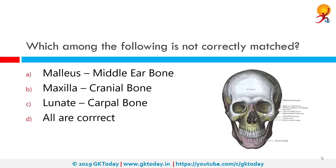Which among the following is not correctly matched? Among these options, the incorrect match is maxilla to cranial bone. Maxilla is actually a facial bone. It is the upper fixed bone of the jaw formed from the fusion of two maxillary bones.